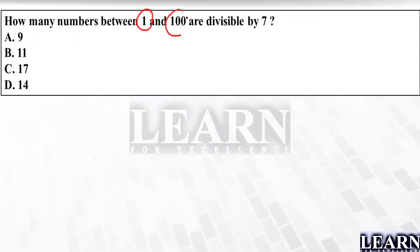They have given the numbers from 1 to 100. So what you have to do is divide 100 by 7. We already know 100 by 7 is 14.28, so the answer is 14. I can see there are 14 numbers which are divisible by 7 between 1 and 100.